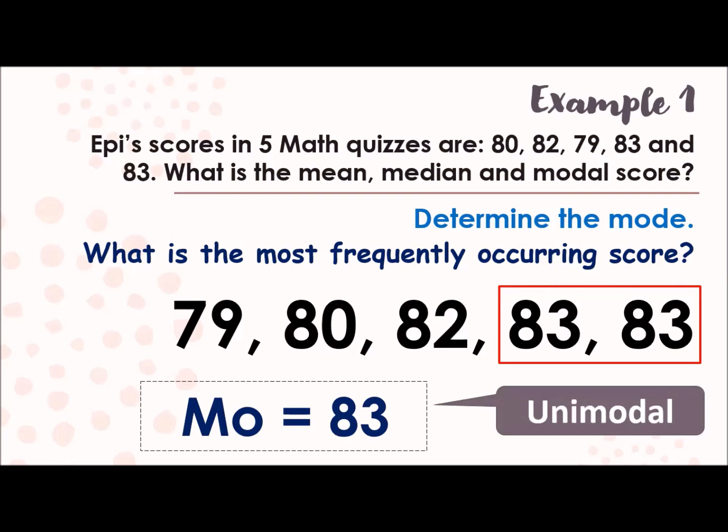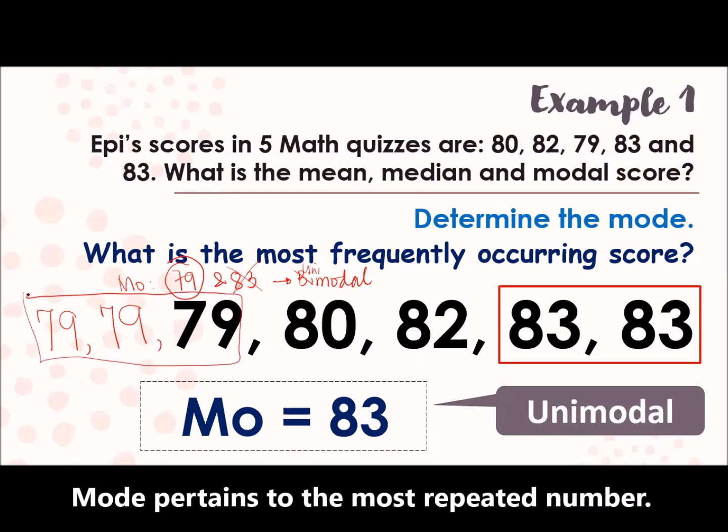Because some people think, ah, there are two 83s, so is that bimodal? It's not correct. You chose the mode 83 because it's many. Of course, the one that repeats the most, which is two times. So another one, what if I add here a 79? What will be our mode? So our mode now will be 79 and 83, which is now considered as bimodal. Now what if I add another 79? So that means, our mode will just be 79, not 83 anymore. And that will be unimodal, because 79 is the one that repeats the most.